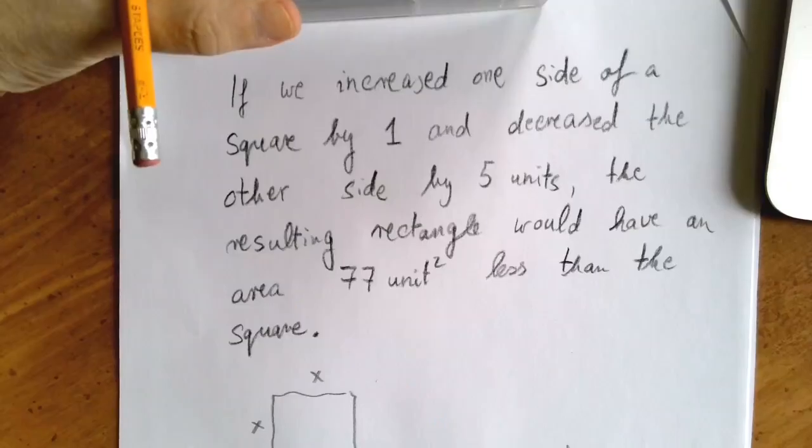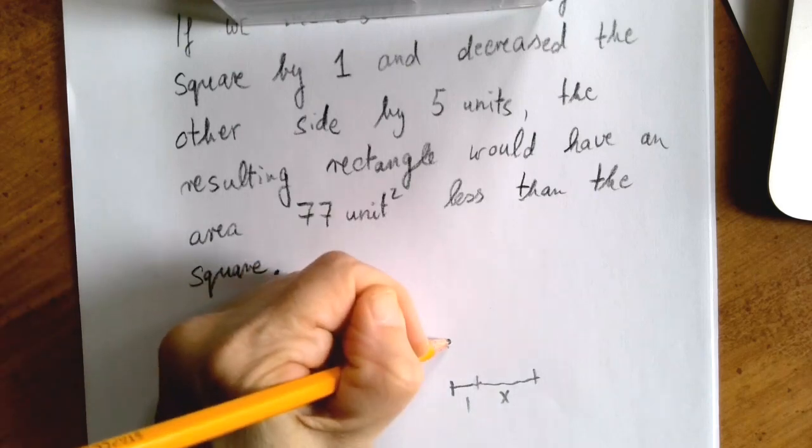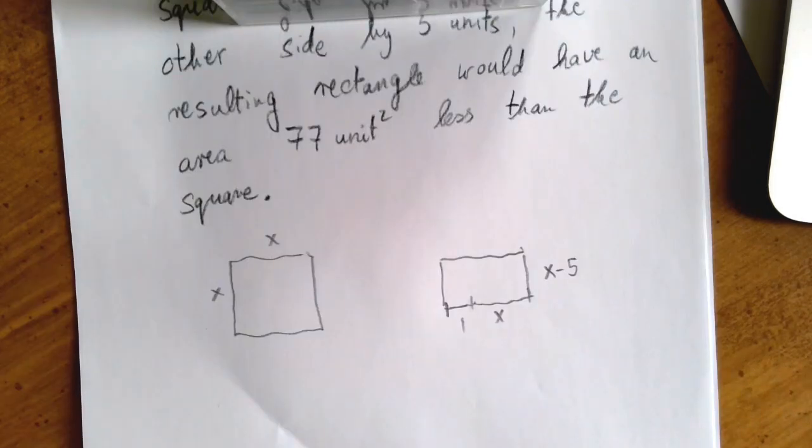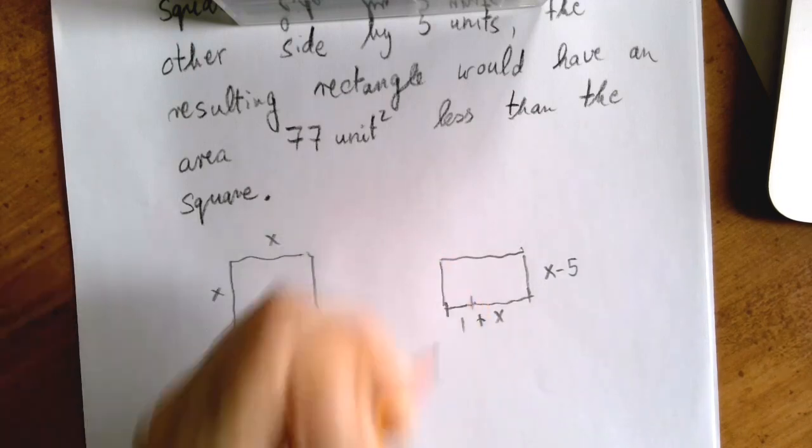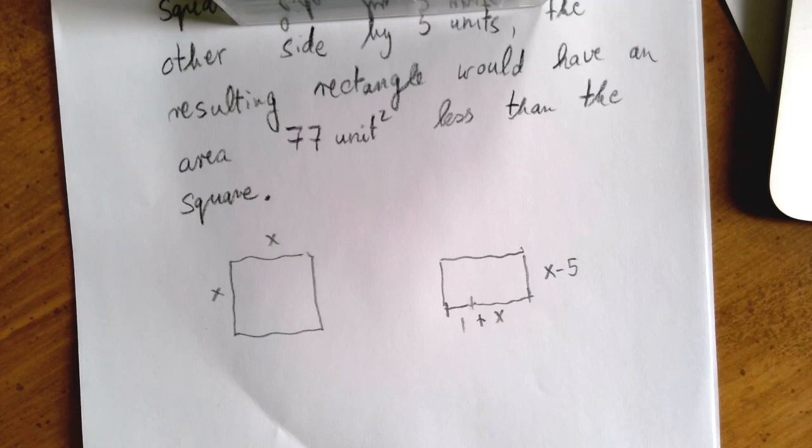So one side increased by 1, and the other side is decreased by 5. If we call the side of the original square x, then after increasing 1, now we have x plus 1 as one side, and the other side is x minus 5 because we decreased that side by 5 units.